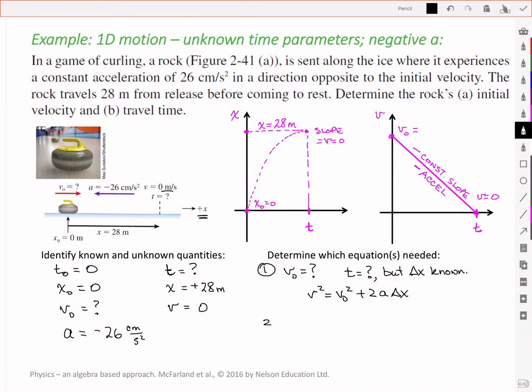And number two, we're asked for the travel time. So the t that is unknown here. But now, I will know both of my velocities, because I've solved for the initial velocity up above, and I know my acceleration. And so I'll be able to then use this equation to solve for my time.